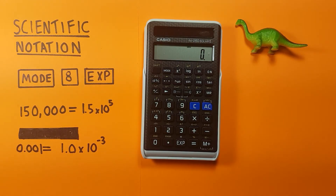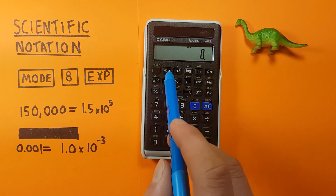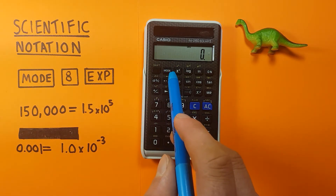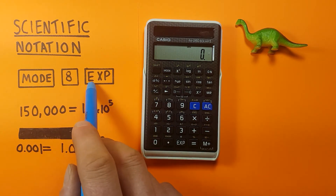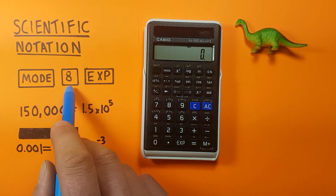Hello and welcome to HP Calcs. I'm Rick and we're going to have a quick look at the Casio FX 260 Solar calculator and how to use scientific notation on it. To do this we'll be using the mode button, located right here, and the EXP button, located down here. Mode 8 is the mode we'll be using.